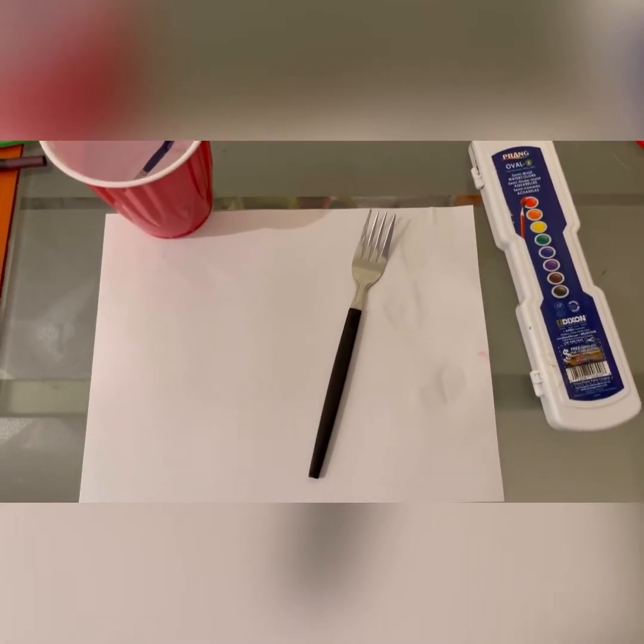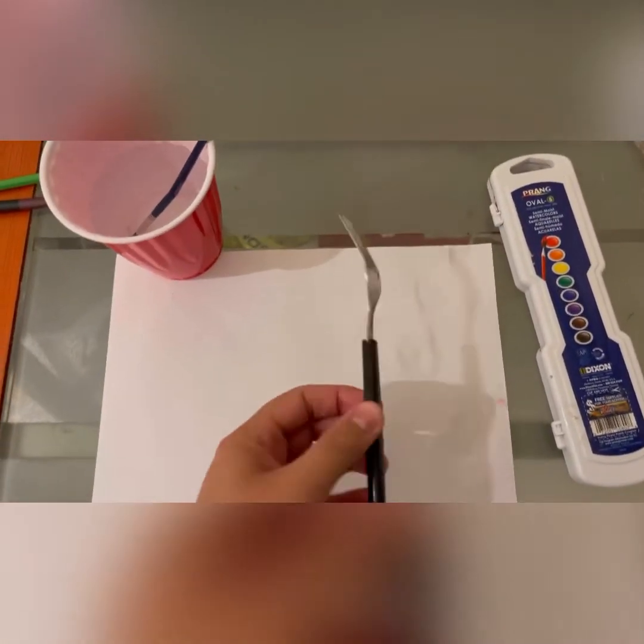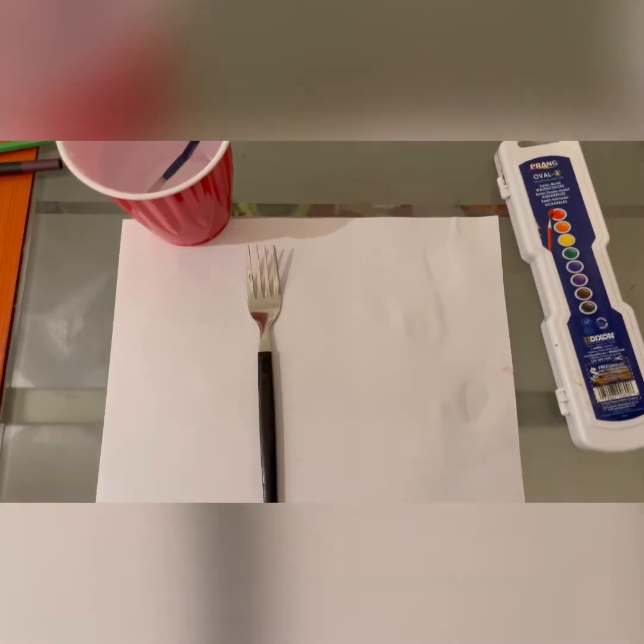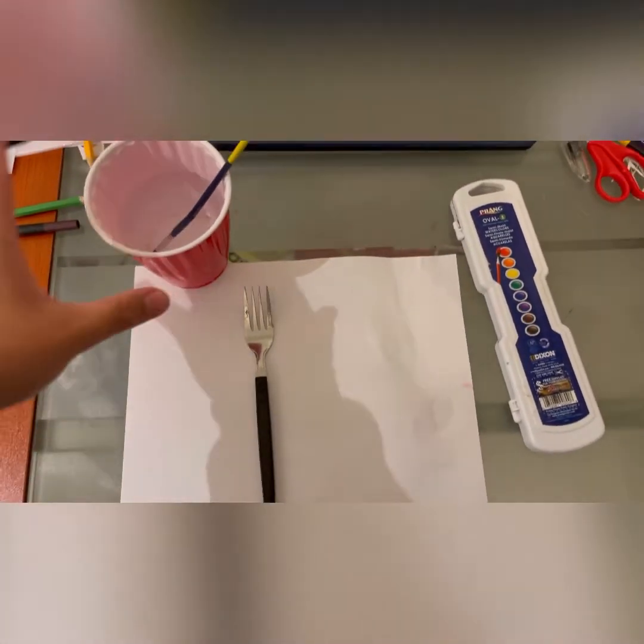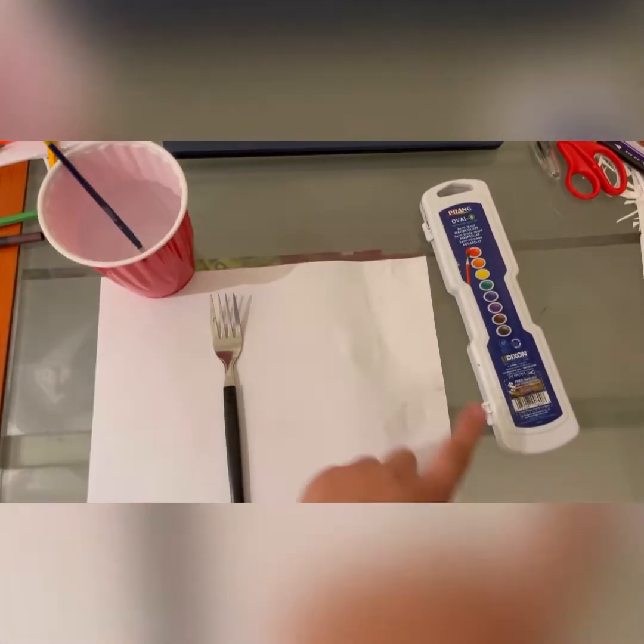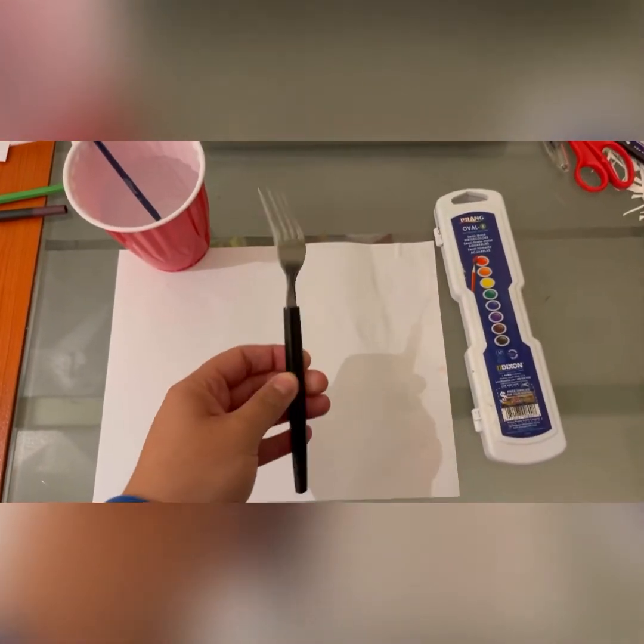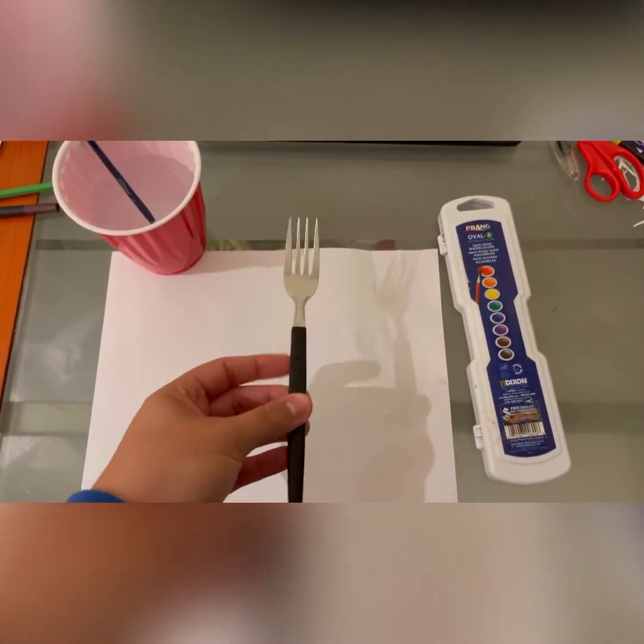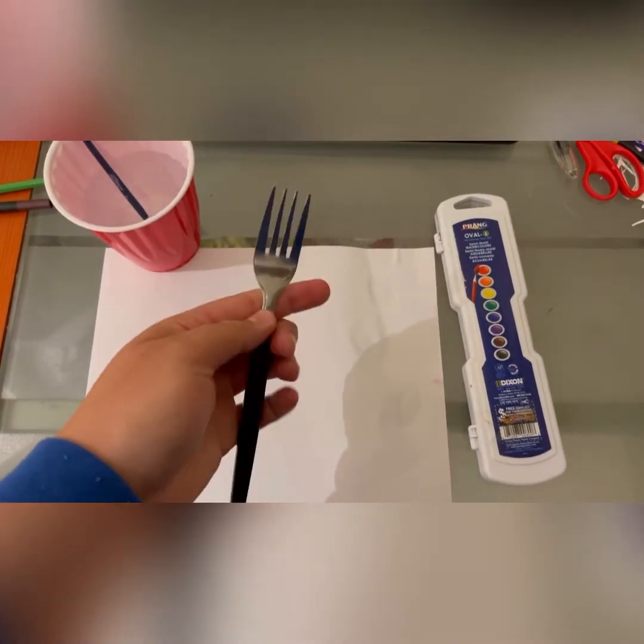So we're going to make some tulips with a fork. The materials that you're going to need are just a wet piece of paper, some water for the paintbrush, some watercolors, and the fork. I used this one but if you have a plastic fork, it's better so you don't get this one dirty.